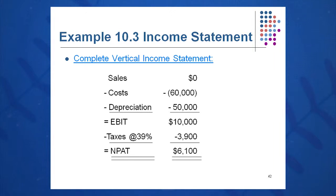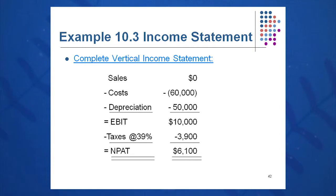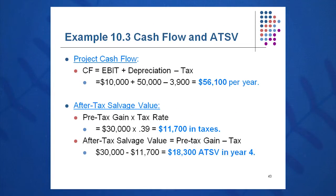Same approach we've always used: income statement, balance sheet, cash flow. Sales are zero, costs are $60,000 in savings, and depreciation straight line to zero is $50,000. Watch your sign — costs are negative, so taking minus-minus 60 minus 50, I get an EBIT of $10,000. Taxes at 39% are $3,900, giving an NPAT of $6,100. I can quickly do an OCF bottom-up because there's no interest expense, and the OCF comes out to $56,100 each year for four years.